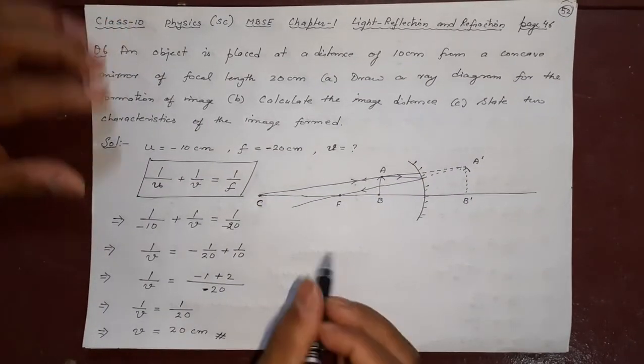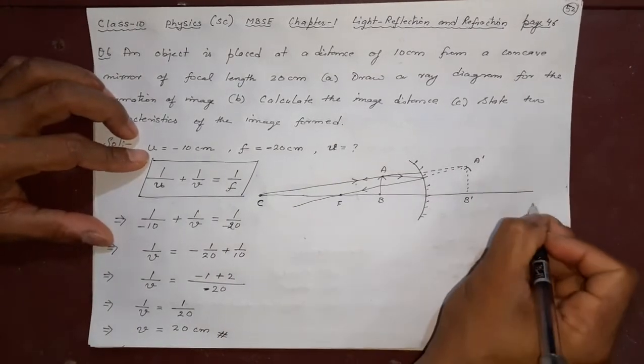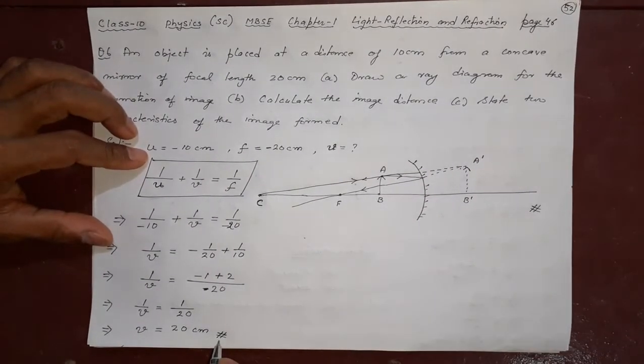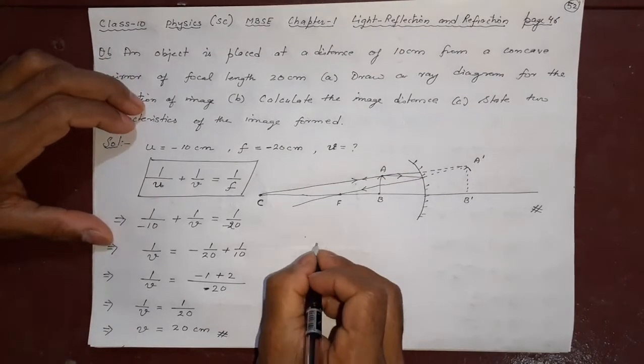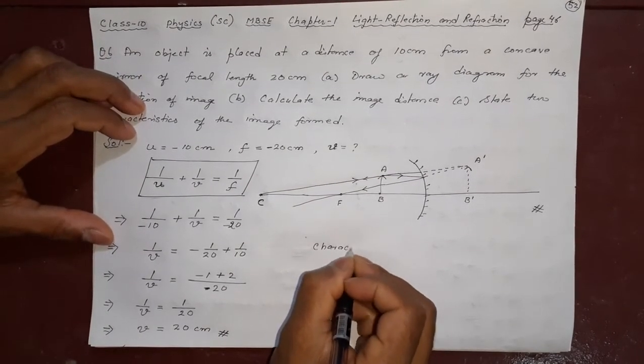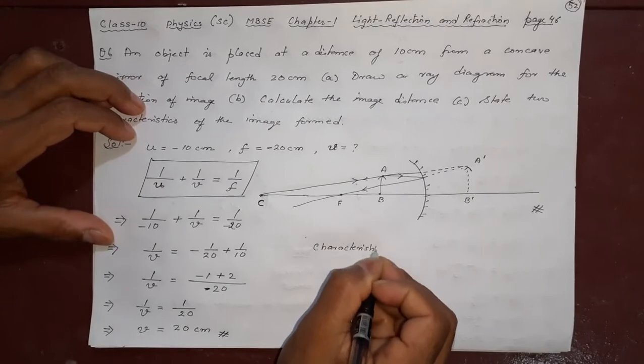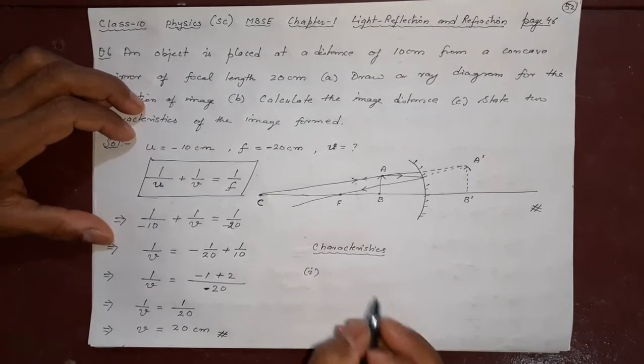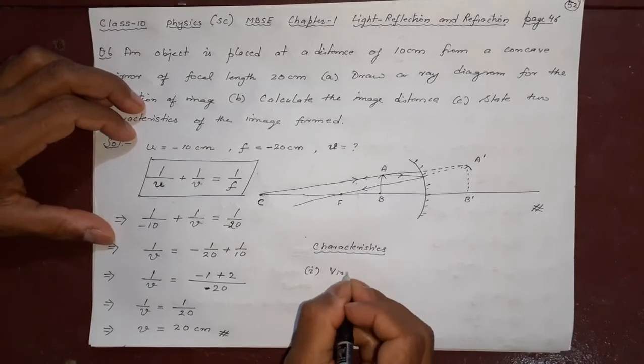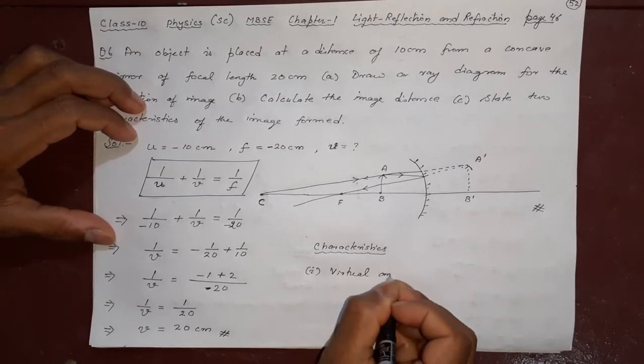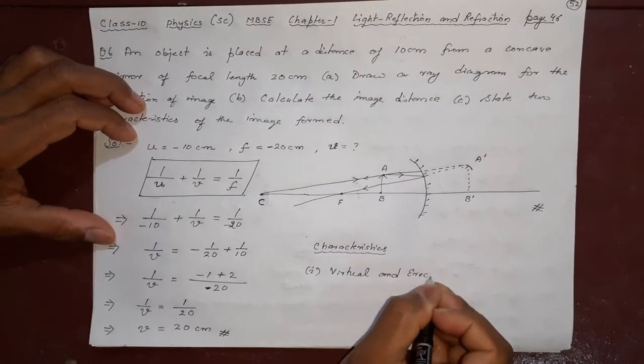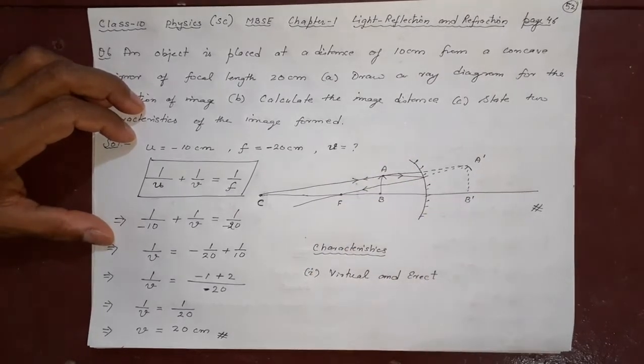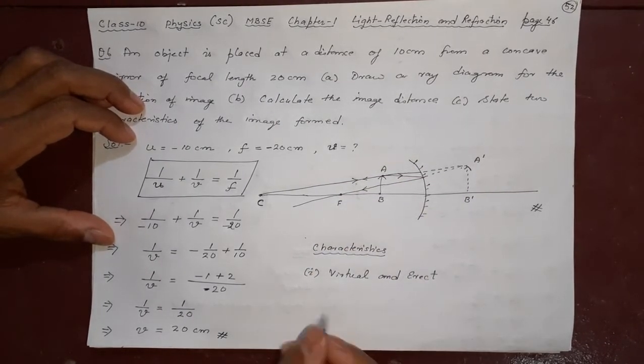A is answered. B is answered. C. Characteristics of the image. What is the characteristics? Number one, this is the virtual image. Virtual and erect. Erect means A is on the upside. Here also A is up. Head is always upside here in the erect.